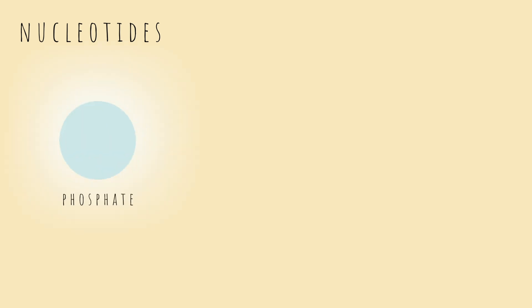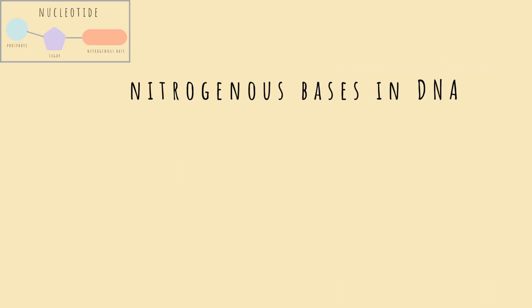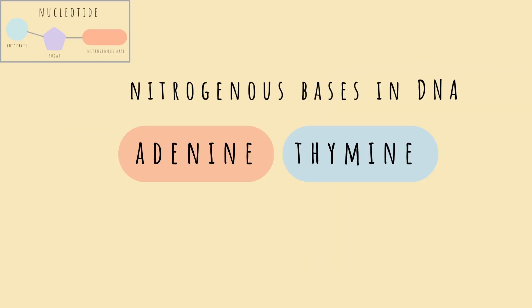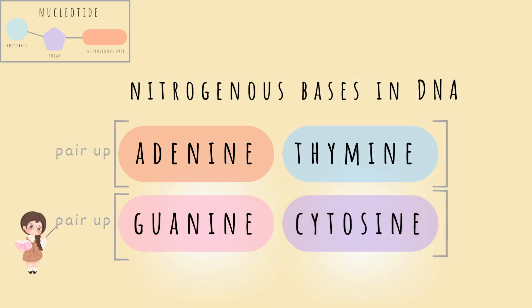Nucleotides are made of a phosphate, a sugar, and a nitrogenous base. The nitrogenous bases in DNA are adenine, thymine, guanine, and cytosine. Adenine and thymine pair up, as do guanine and cytosine.